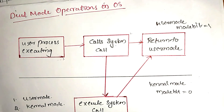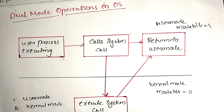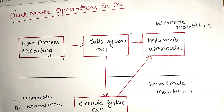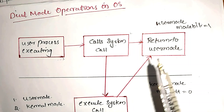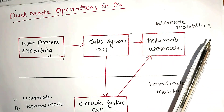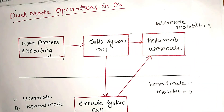Next we will discuss the dual mode operations of the operating system. There are two modes: the first is user mode and the second is kernel mode. A mode bit is used to represent the current mode — mode bit 1 means the system is in user mode, and mode bit 0 means the system is in kernel mode.